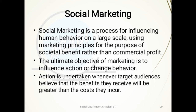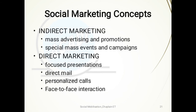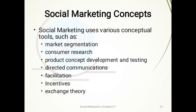Social marketing is a process for influencing human behavior on a large scale, using marketing principles for the purpose of societal benefits rather than commercial profits. The ultimate objective of social marketing is to influence action or change behavior. Action is undertaken whenever target audiences believe that the benefits they receive will be greater than the costs they incur. Methods include direct marketing, mass advertising and promotions, special events and campaigns, direct mail, personalized calls, and face-to-face interaction. Social marketing uses conceptual tools such as market segmentation, consumer research, product concept development and testing, direct communication, facilitation, incentives, and exchange theory.